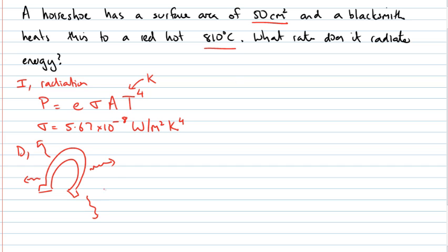Now we're told the temperature and we're told the area and we know what this constant sigma is. What about the emissivity E? We're not given that as a value. We can make a fairly good stab at what we think the value should be.